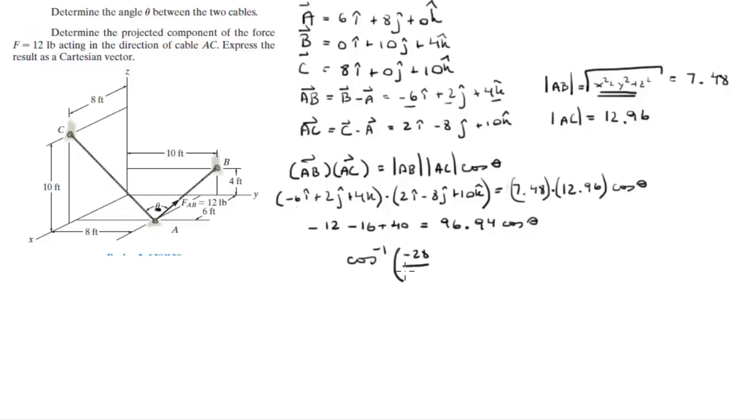So cosine inverse of... minus 28 plus 40 comes out to be positive 12 over 96.94, is equal to theta, and theta comes out to be 82.9 degrees.